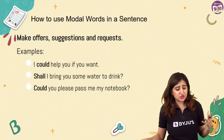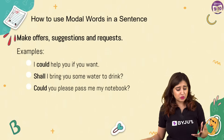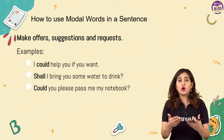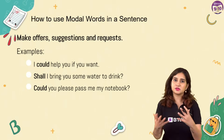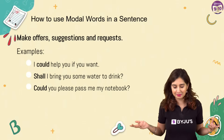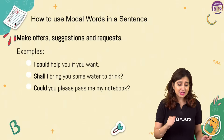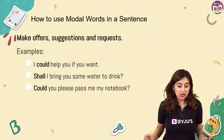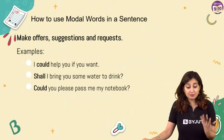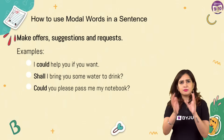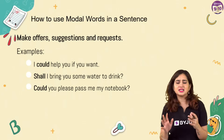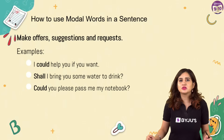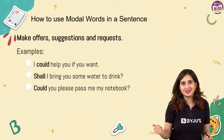To make offers, suggestions, and requests: 'I could help you if you want' - this is a suggestion and an offer. 'Shall I bring you some water to drink?' - making an offer; if you say yes I will bring it, if you say no I will not. 'Could you please pass me my notebook?' - this is a very polite request. 'I could help you if you want' can be categorized as both an offer and a suggestion that maybe you need my help.